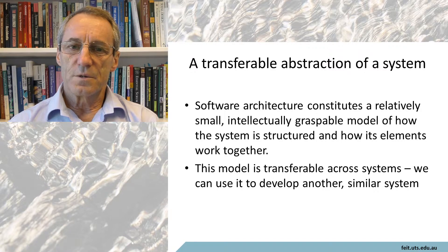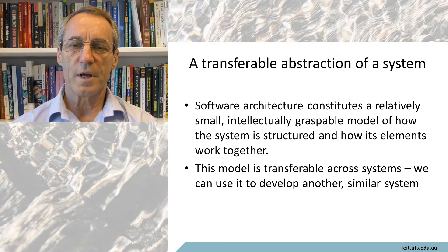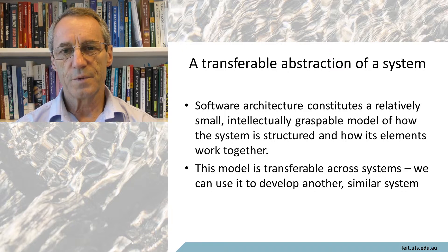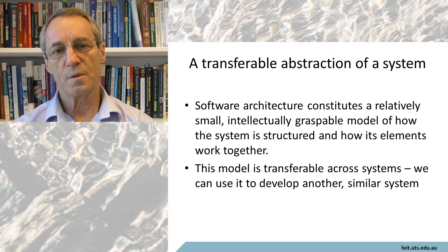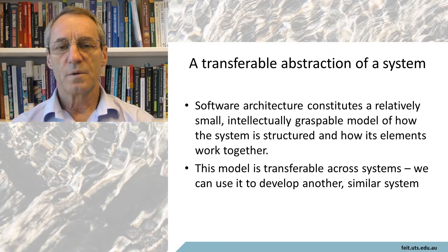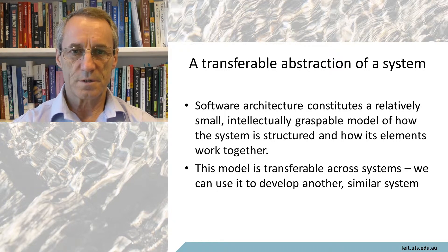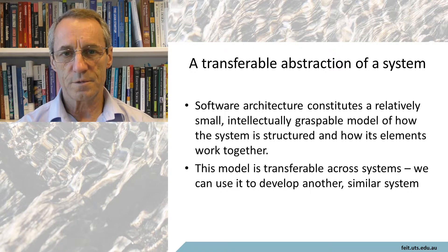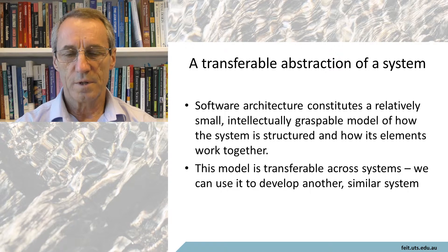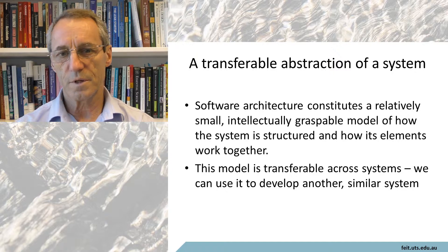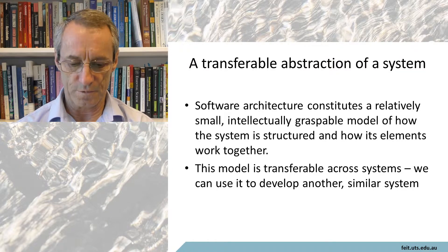An architecture is also a transferable abstraction of a system. We can design an architecture for a system now, implement that system, and then take that same architecture and go away and implement a second system that will not be exactly the same as the first — it'll be a different implementation. So the architecture becomes an abstraction of a system that we can then implement multiple times if we want.